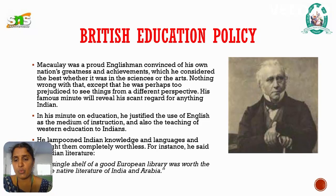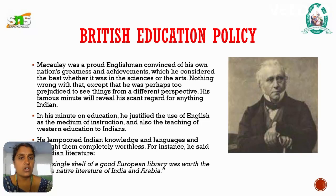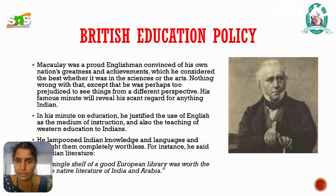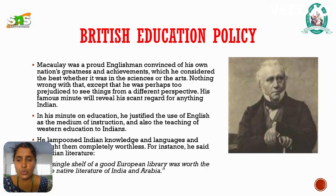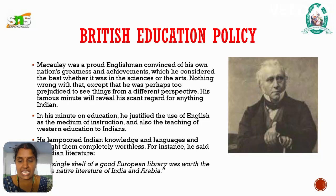Macaulay wanted the government to spend money only on imparting western education and not on oriental education. He advocated the shutting down of colleges where only eastern philosophy and subjects were taught. He said that Sanskrit had very lesser value compared to other languages, and he wanted western education to be imposed inside India. He also wanted to create a pool of Indians who would be able to serve British interests and be loyal to them — a class that would be Indian in blood and colour but English in taste, opinion, morals, and intellect.